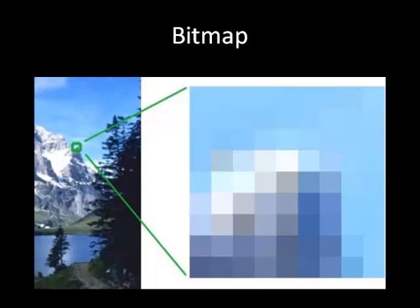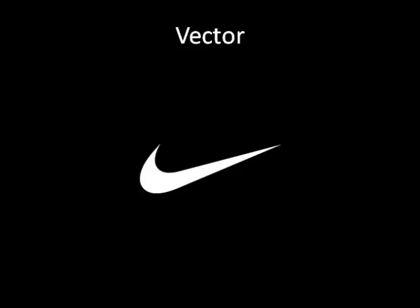Bitmaps: if you were to look at this image of a mountain on the left-hand side and zoom in a hundred times, you get down to the actual pixels — that is what a photograph is made up of, all these different bits. And then the world's favorite vector would be the Nike swoosh. This is a symbol filled with white, a mathematical equation filled with a solid color placed here on a black background.